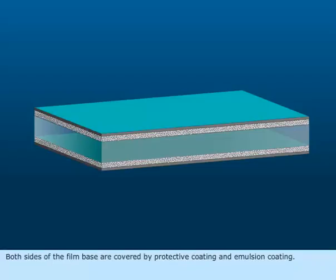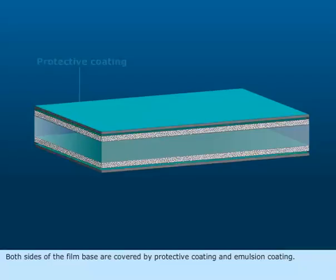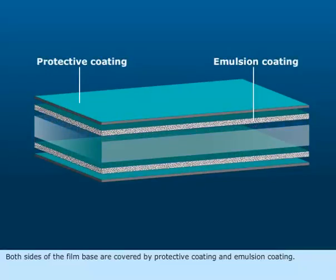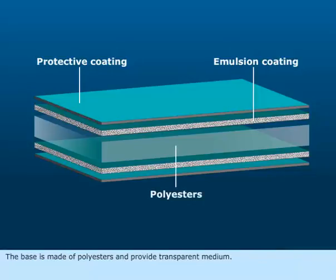Both sides of the film base are covered by protective coating and emulsion coating. The base is made of polyesters and provide transparent medium.